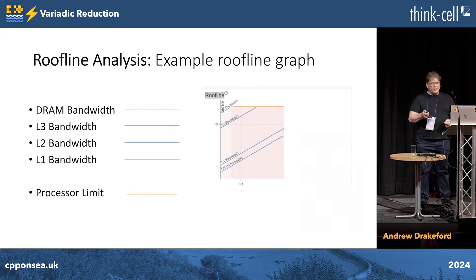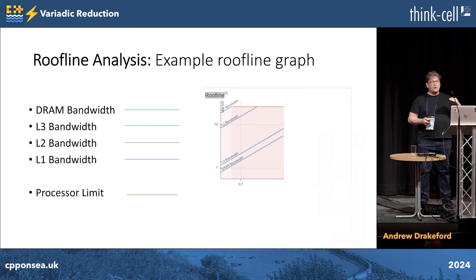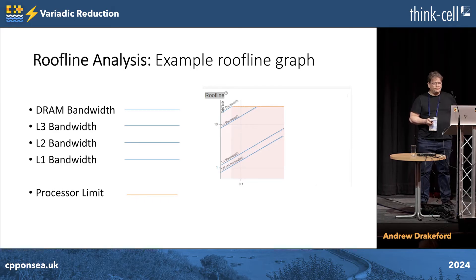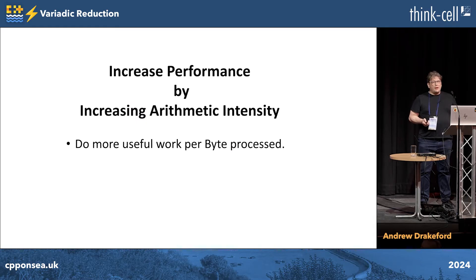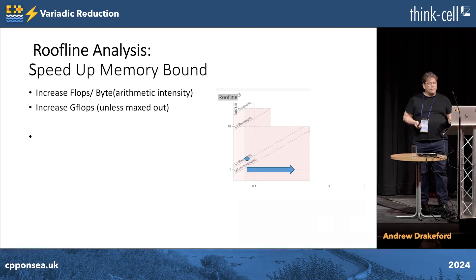The blue lines going up diagonally show where the bandwidth is limited and it's memory bound. The orange line at the top is where processing is limited — we're simply not getting any more gigaflops out of it. So how can we make something go faster? We're going to try and increase the arithmetic intensity, doing more useful work when we're memory bound.